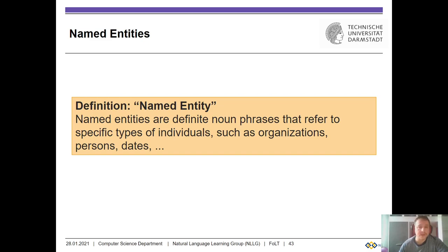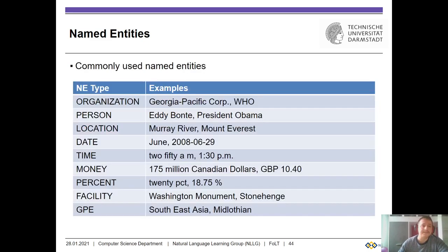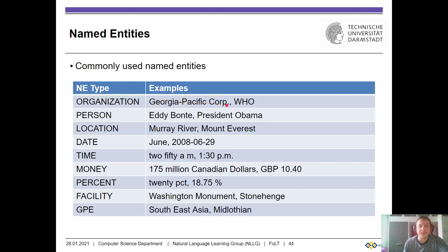So, if we have the noun phrase chunks, it is easier for us to detect the named entities. Here are some commonly used named entity types. Organization would contain things like Georgia Pacific Corporation, WHO, Amazon, Facebook, Google, etc.